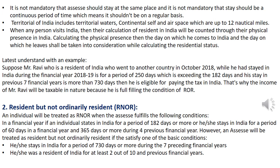Coming to Resident but Not Ordinarily Resident (RNOR): an individual will be treated as RNOR when they fulfill the basic residency conditions — staying for 182 days or more, or 60 days or more in the financial year and 365 days or more during the 4 preceding years — but do NOT satisfy the additional conditions of staying 730 days or more during 7 preceding years, or being a resident for at least 2 out of 10 previous financial years.